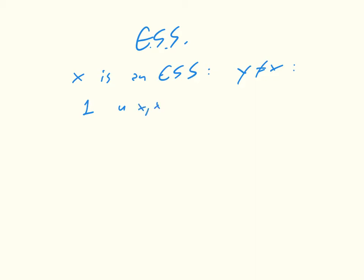One, that the utility of x in x has got to be greater than the utility of y in x. In other words, that the particular strategy beats this particular potential invader, is not as good. Or they have equal utility.